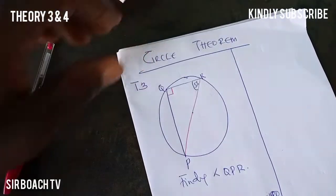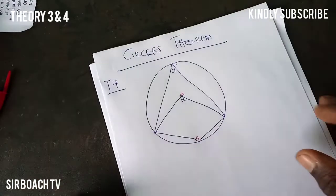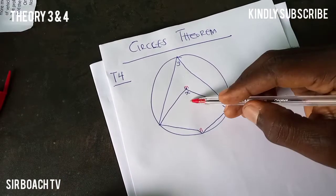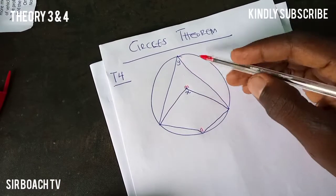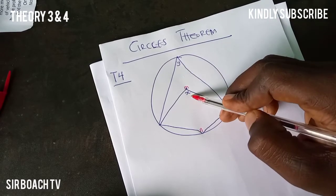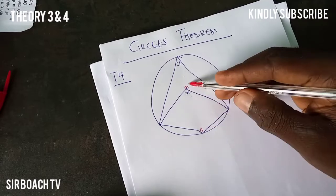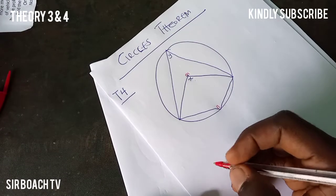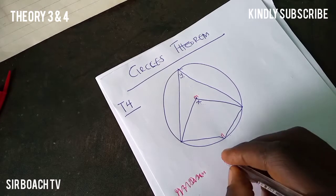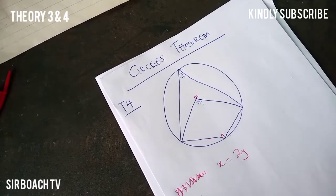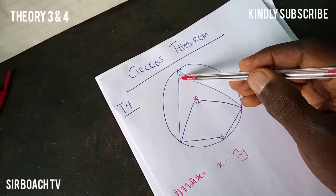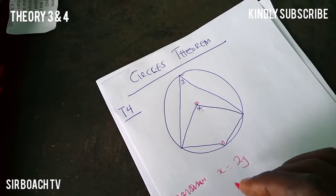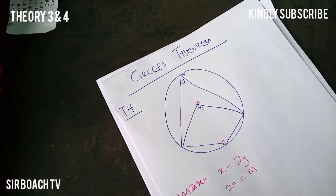Now let's move to Theorem 4. Theorem 4 looks like this: we have X and Y, and from the first theorem, two of one angle makes the other. So X equals 2Y — this X here is equal to two of this Y. Similarly, two of N will give you M.